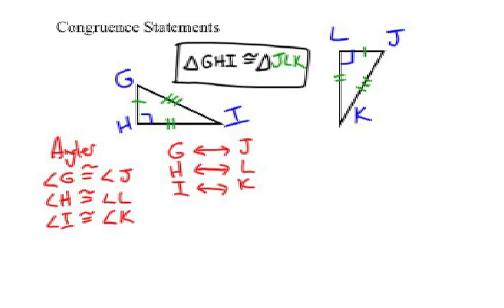Now, I would like you to write the segment pairs that are congruent. That's right. Notice that GI must be congruent to which one? That's right, JK.